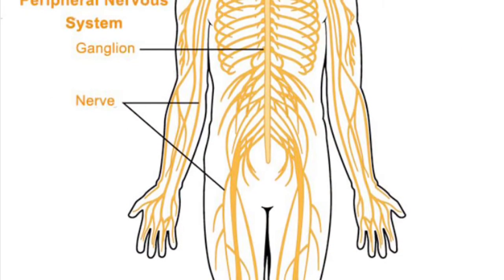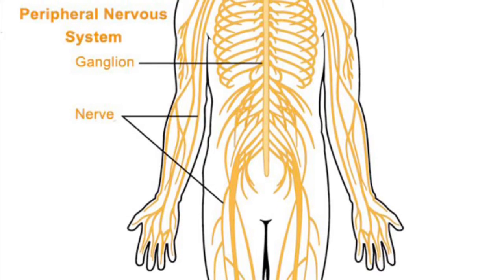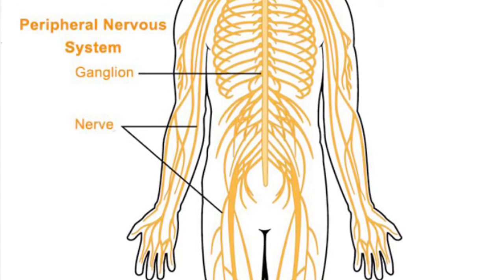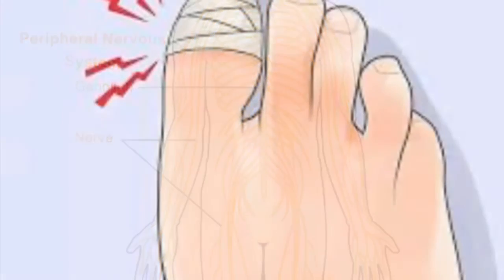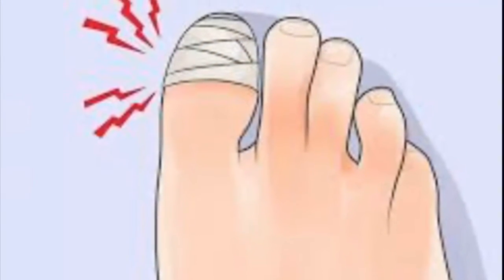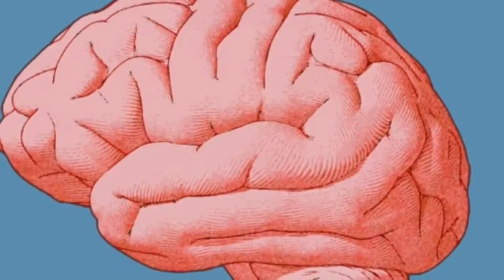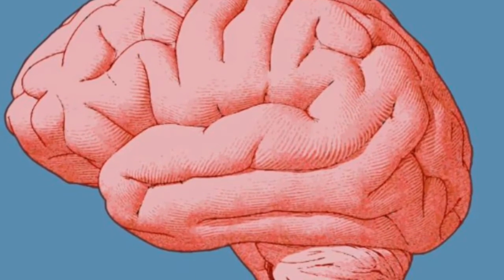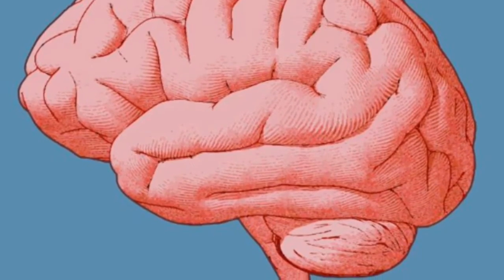Another system is the nervous system, which depends on neurons embedded in your skin to sense the outside world. This is where your sense of touch comes in, initiating action based on those inputs. For example, when you stub your toe, nerve cells in the foot send signals up the leg, through the spinal cord, and up into the brain.